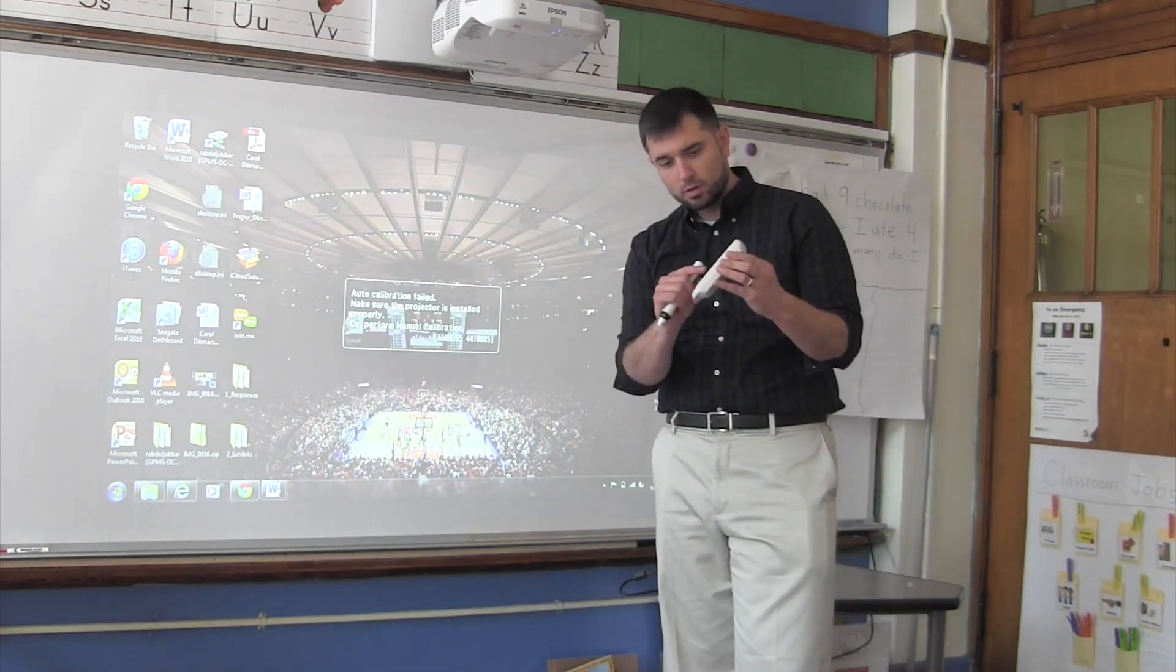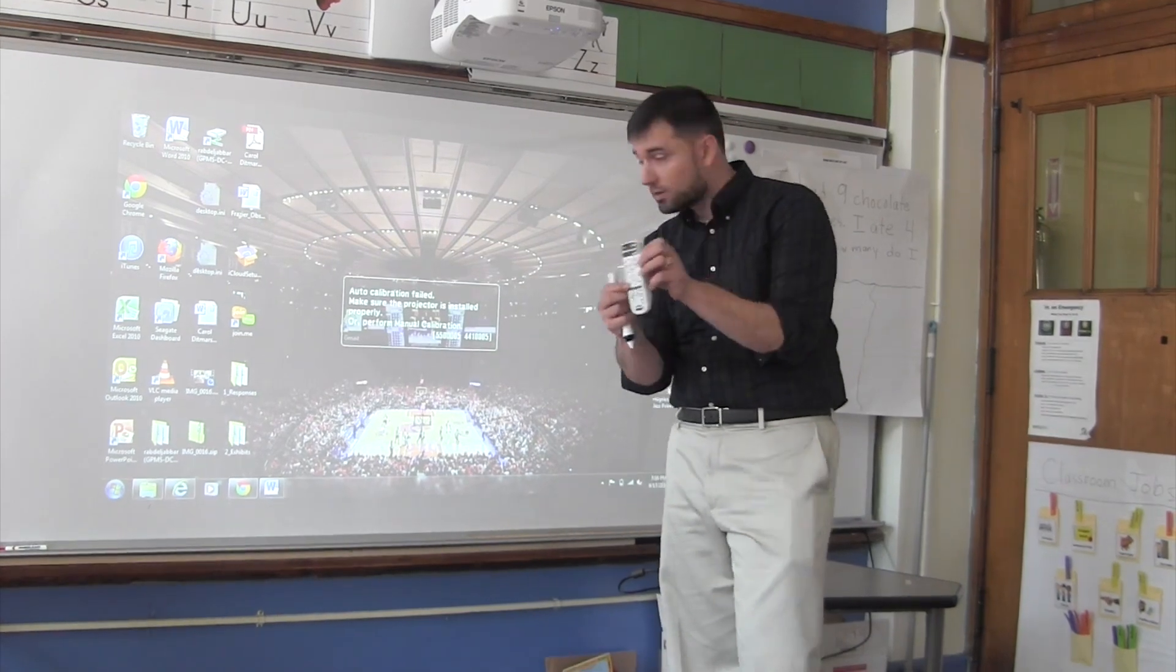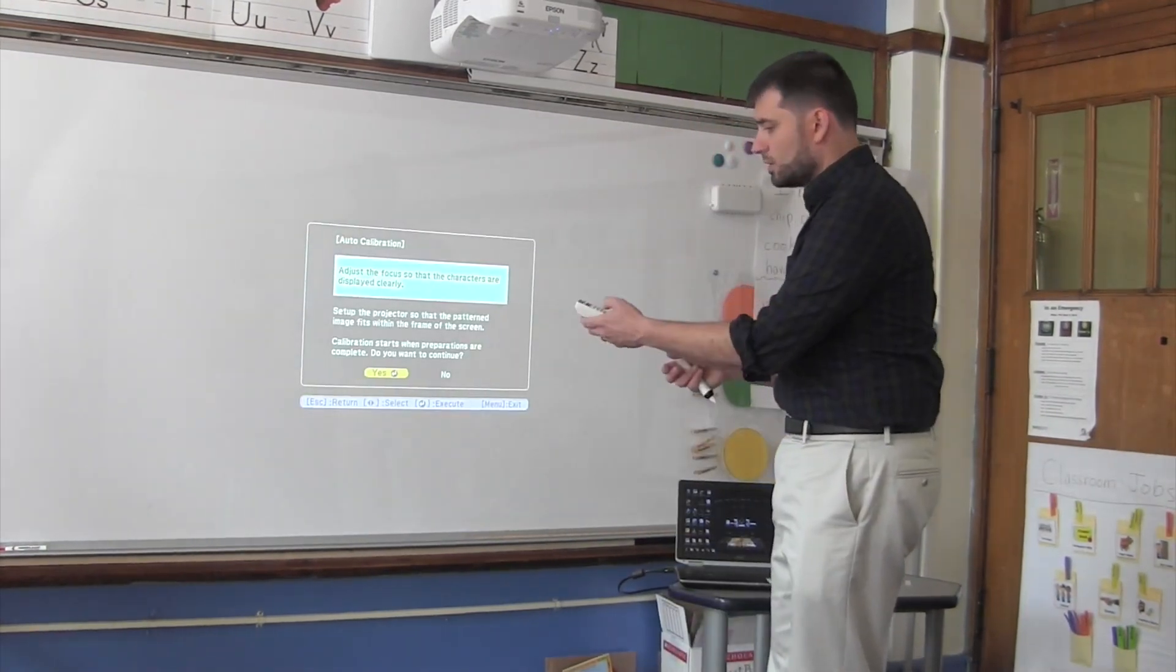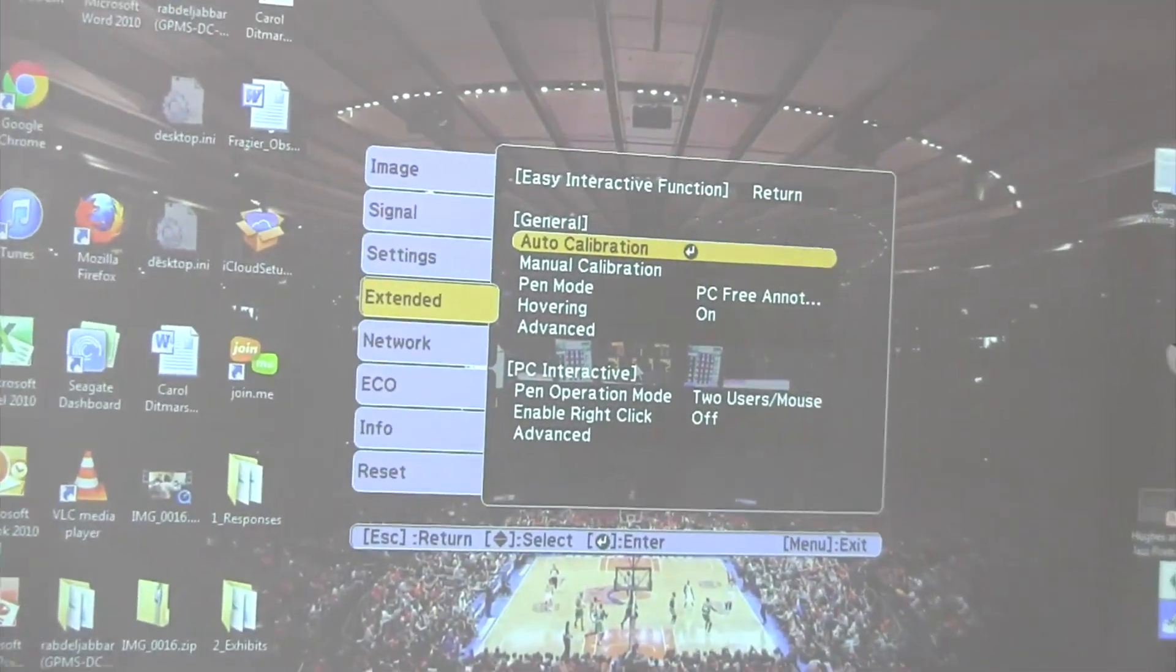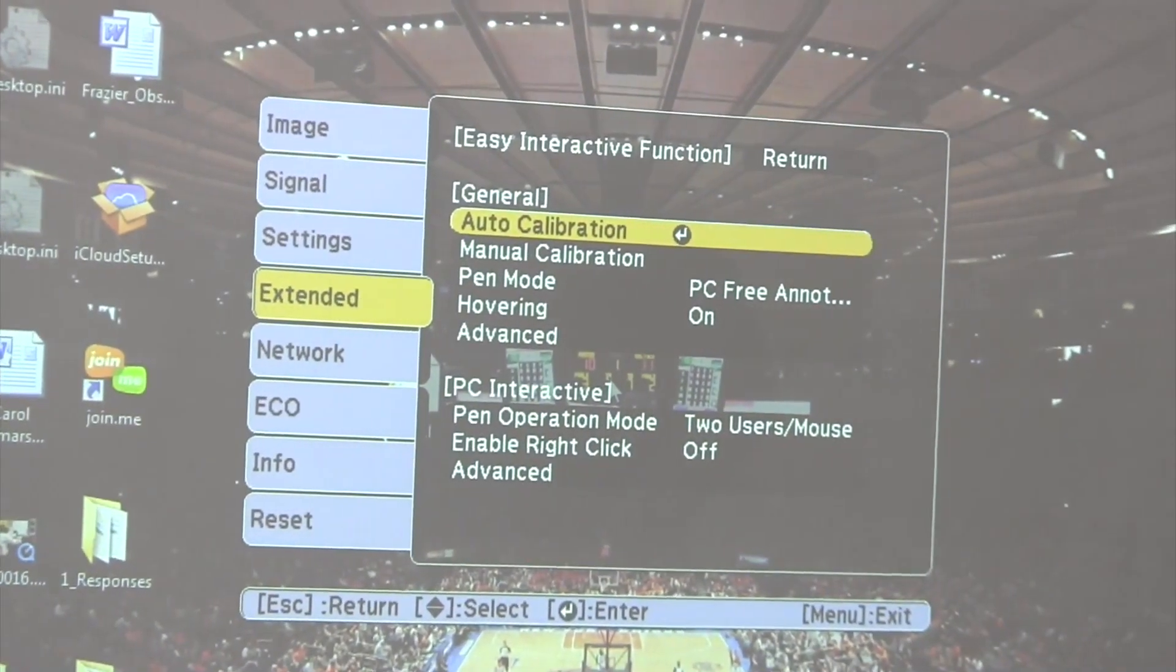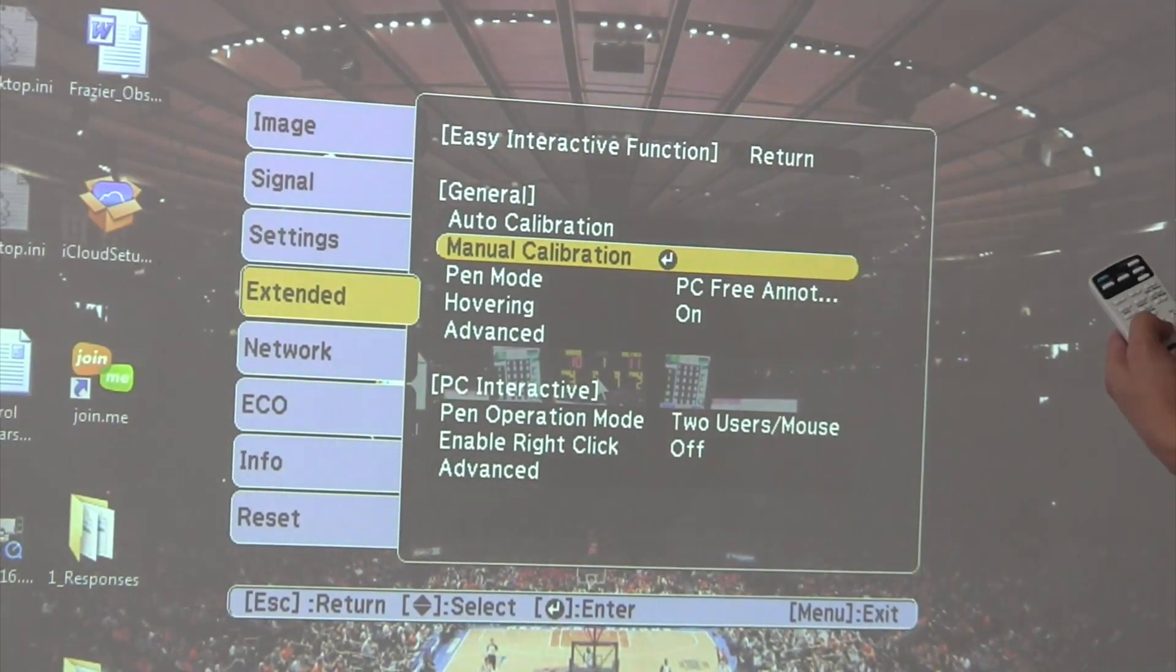Take your remote to calibrate the pen with the board and press the user button. Select no so that you can manually calibrate the projector. Move from auto calibration to manual calibration and press the center button.